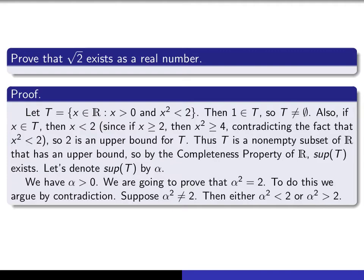As a consequence, T is a non-empty subset of the real numbers with an upper bound, and therefore by the completeness property of ℝ, the supremum of that set exists. We denote that by the letter alpha, and we're going to prove that alpha is the square root of 2. It's obviously positive, because the least upper bound of any set of positive numbers has to be positive. We're now going to show that its square is equal to 2, and we're going to do that by contradiction.